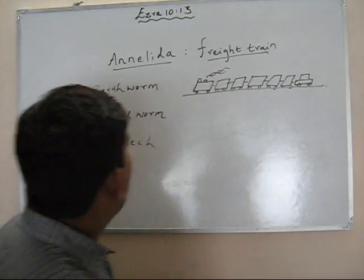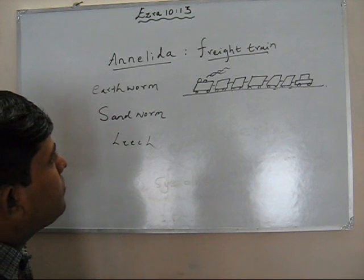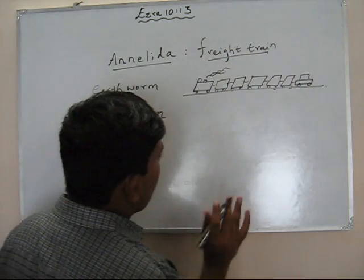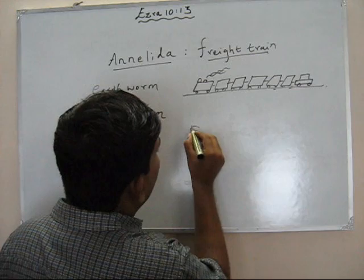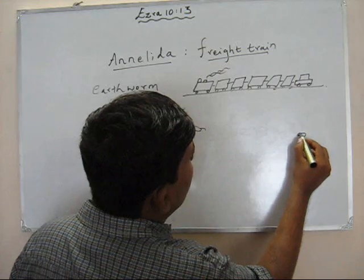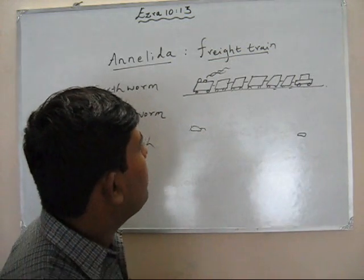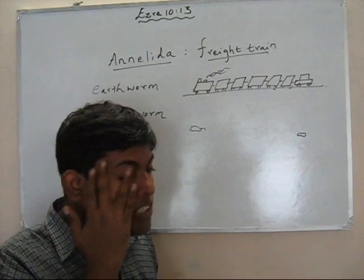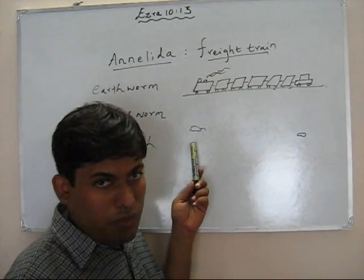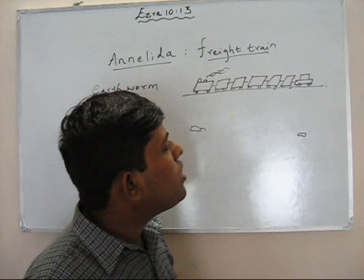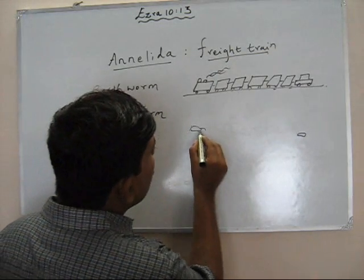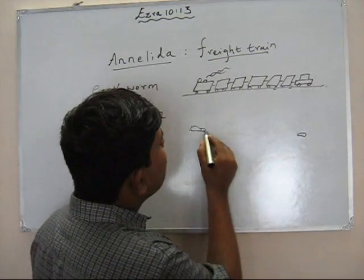Now we have the freight train complete. Let us see how we can associate it with Annelida. Let's draw an earthworm. The earthworm has a head and a rear end. The engine of the freight train is associated with the head of the earthworm. The caboose of the freight train is associated with the tail or the rear end of the earthworm. Now as you all know, the earthworm has a segmented body.